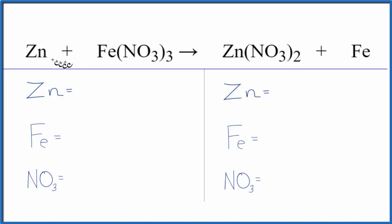We'll start with zinc. We have one of those, and then iron, we have one of those. But for the NO3 here, it's a polyatomic ion. It's called the nitrate ion. We have it here, and it stays together in the reaction.